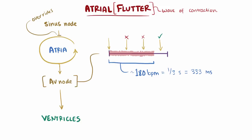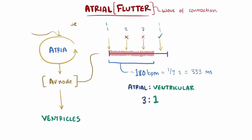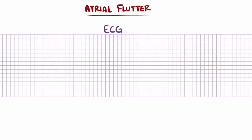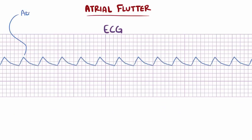So if the atrial rate is higher than 180 beats per minute, you'll end up only getting a ratio of atrial beats to ventricular beats, like 2 to 1 or 3 to 1. That might make a little more sense if we look at an ECG. First I'll show the atrial signals, or P waves — tons of P waves. Let's say 350 per minute. Since they're coming in from a re-entrant circuit, they'll often take on this sawtooth shape.